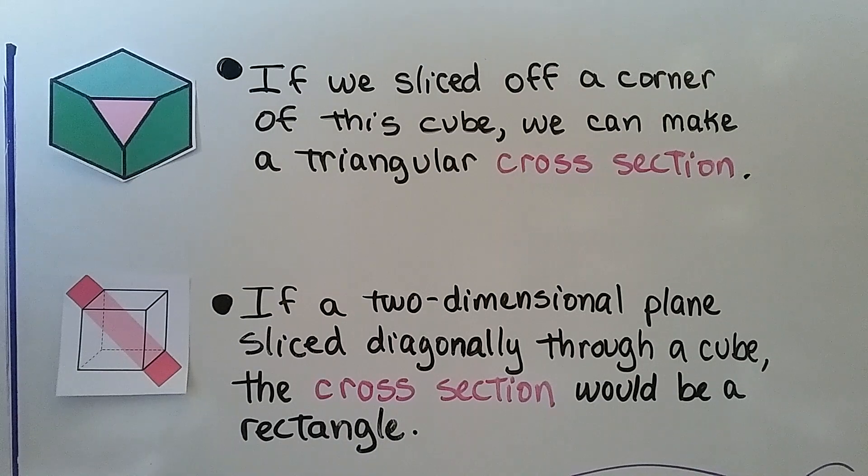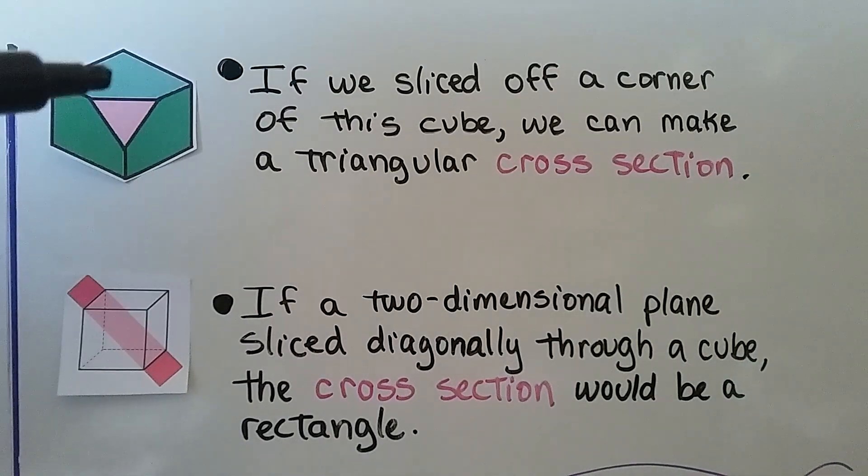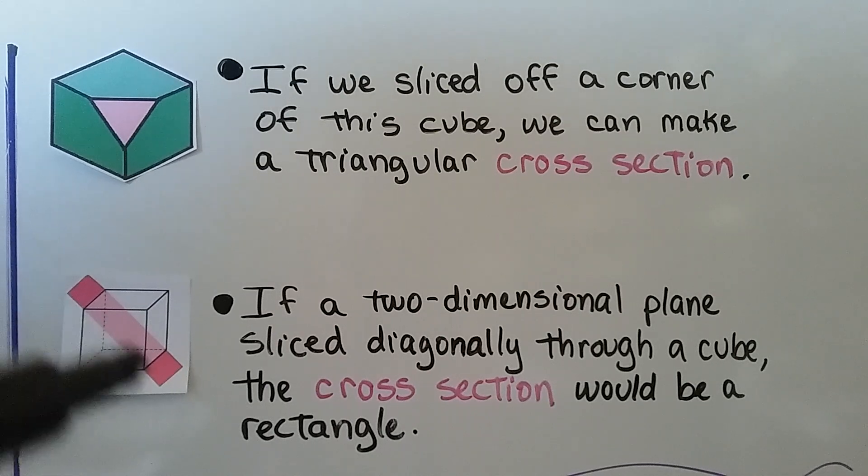If we sliced off a corner of this cube, we can make a triangular cross section. And if a two-dimensional plane sliced diagonally through a cube, the cross section would be a rectangle.